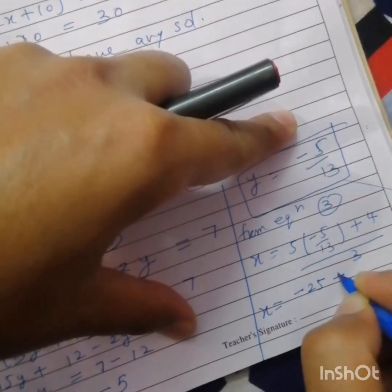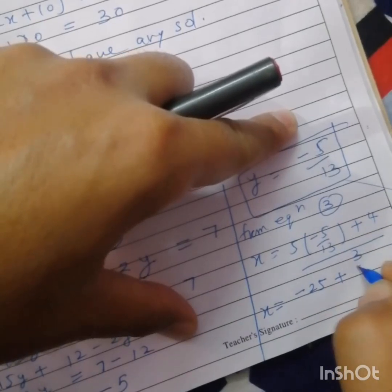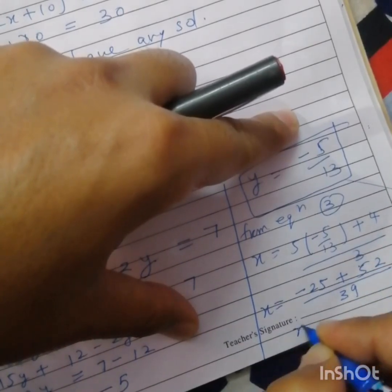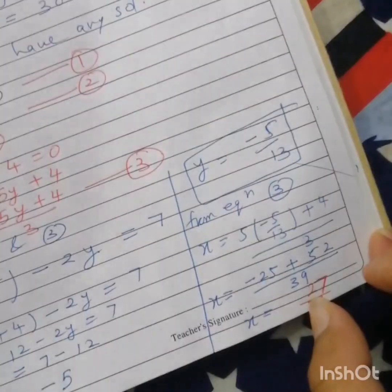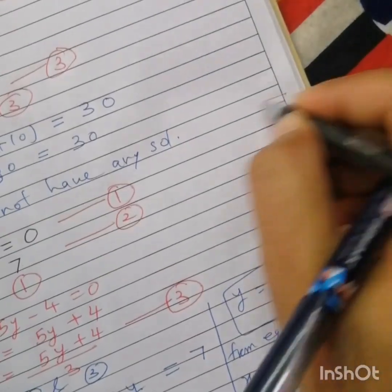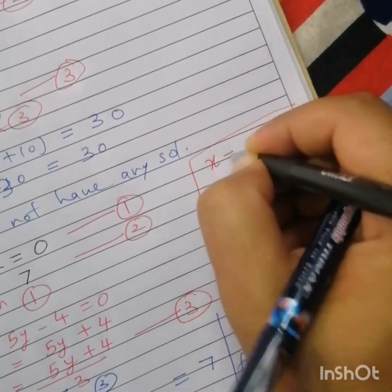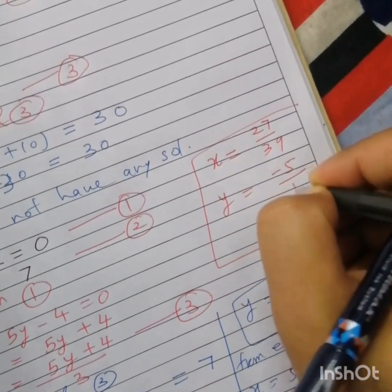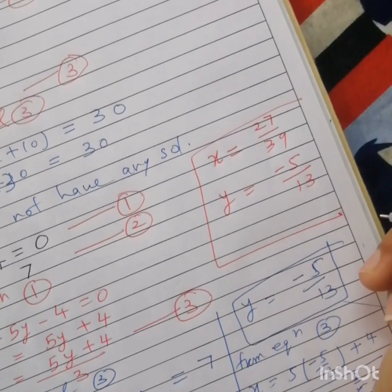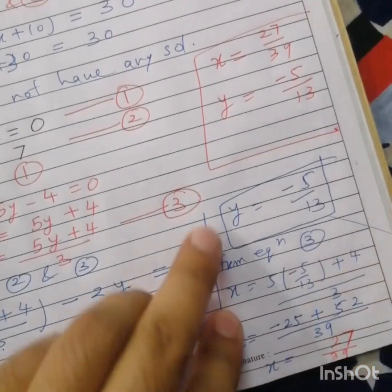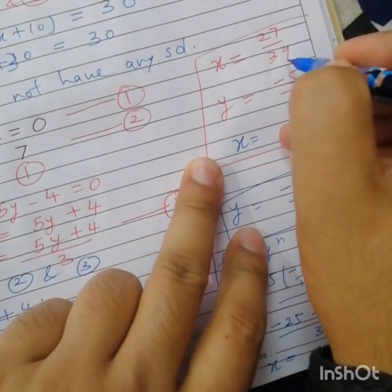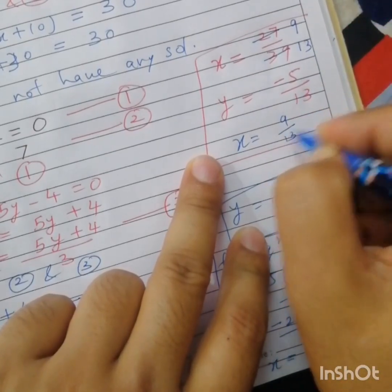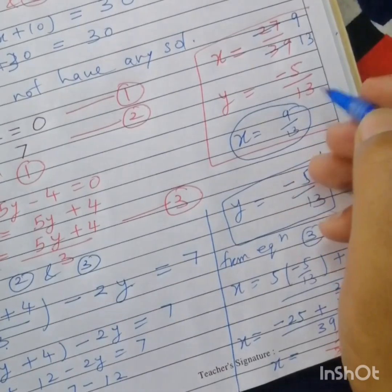Solving: x equals (minus 25 plus 52) divided by 13, all divided by 3 — that is (minus 25 plus 52) divided by 39. Hence x equals 27 upon 39, which simplifies to 9 upon 13, and y equals minus 5 by 13. That is the value of x and y.